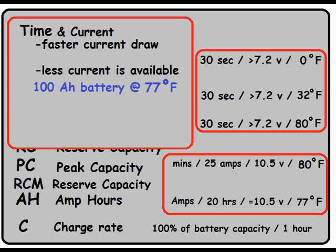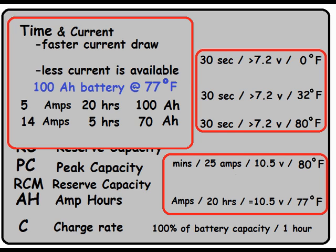For example, let's say we have a battery rated at 100 amp hours. That rating was achieved by pulling 5 amps out of the battery for 20 hours. If you increase your current draw to 14 amps, the battery will be dead in 5 hours and you'll only get 70 amp hours out of it. Or even more extreme, 65 amps will give you 1 hour of use, meaning your battery is dead after only giving you 65 amp hours.